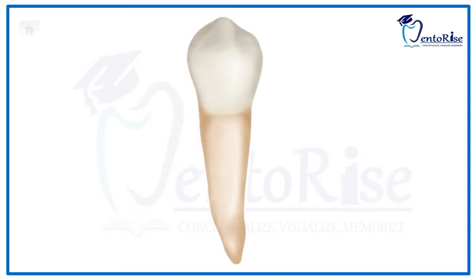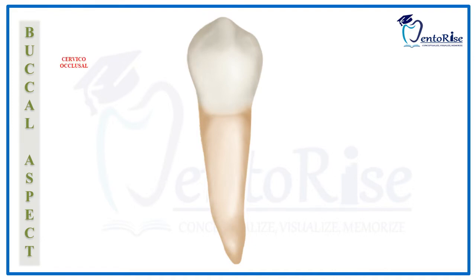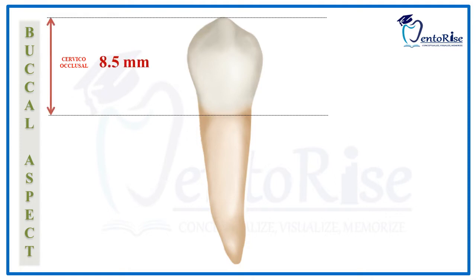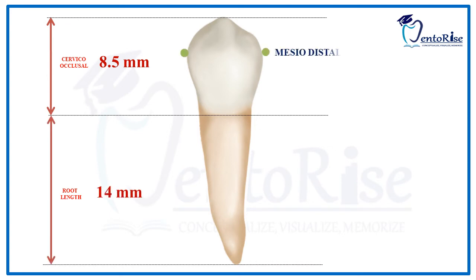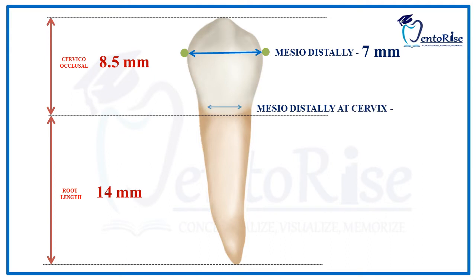Starting with the buccal aspect, the first heading is dimensions. The cervico-occlusal length of the crown, measured from the tip of the cusp till the lowest point on the cervical line, is 8.5 mm. The root length is 14 mm. The mesodistal dimension as measured from the contact areas is 7 mm and the mesodistal dimension at the cervix is 5 mm — a difference of 2 mm.